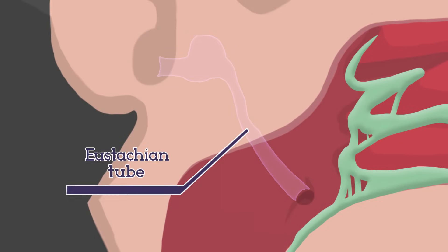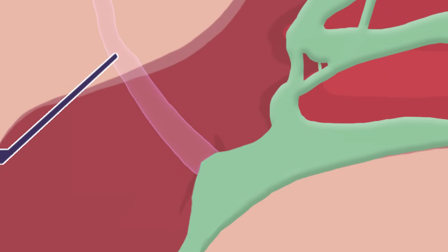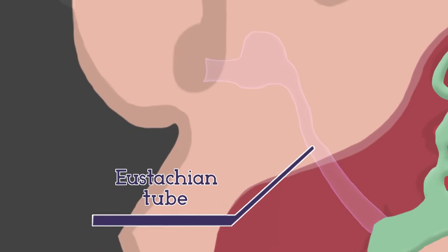The second is the Eustachian tube, which drains fluid from the middle ear. With it also blocked by excessive mucus production from allergic rhinitis, you will have a stuffed ears sensation too.